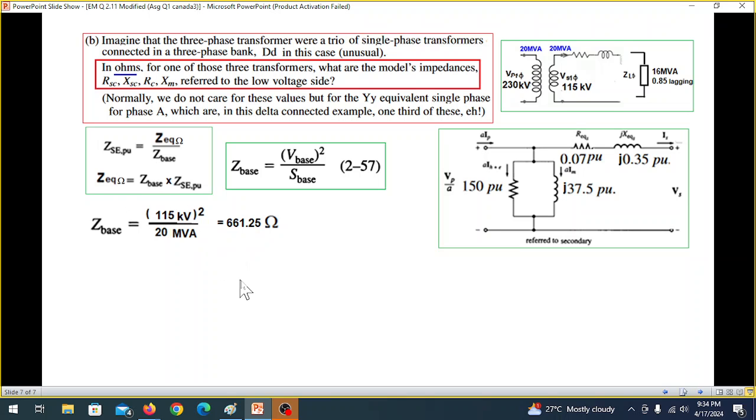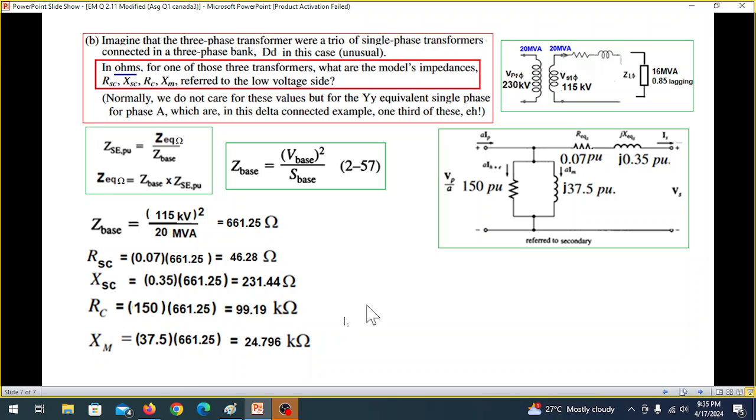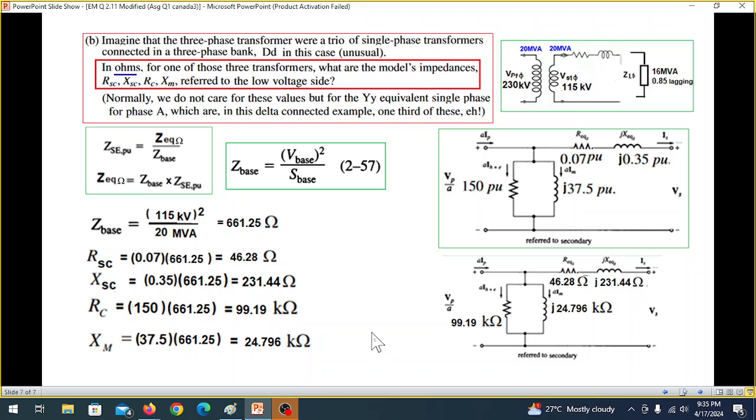Using that, we get this answer that Z-base is 661.25 ohms. And now we can use here to find all the values in ohms. So first of all, R-SC, 0.07 multiplied by Z-base, gives 46.28 ohm. Similarly, X-SC or X-E, 0.35 multiplied by the Z-base gives 231.44 ohms. And similarly, R-C, 150 multiplied by Z-base gives 99.19 kilohms. And X-M is 37.5 multiplied by Z-base gives 24.796 kilohms. So these are the values in ohms. And if you want to write them in the circuit that we have, this becomes in ohms R and X and R and X-M. I hope you have been able to follow this. Please let me know through your comments. Thank you.